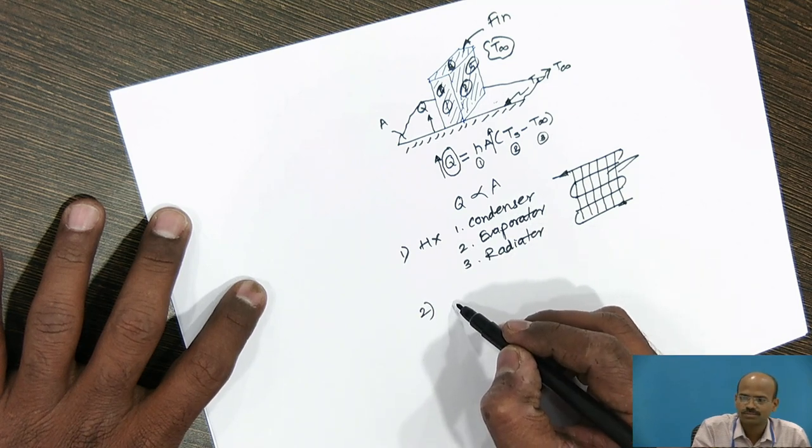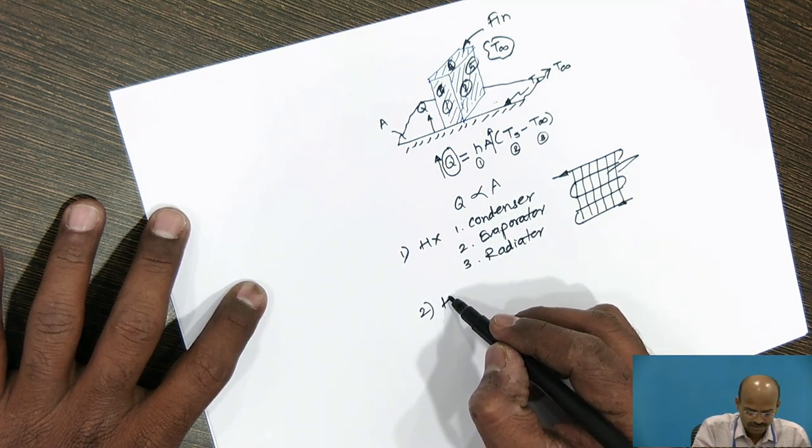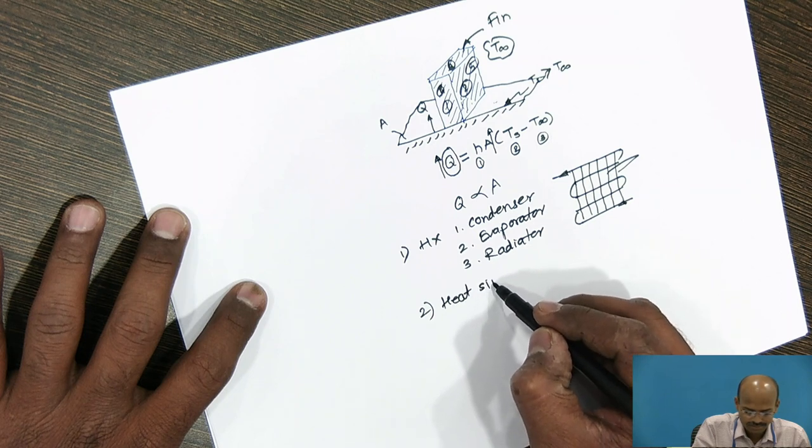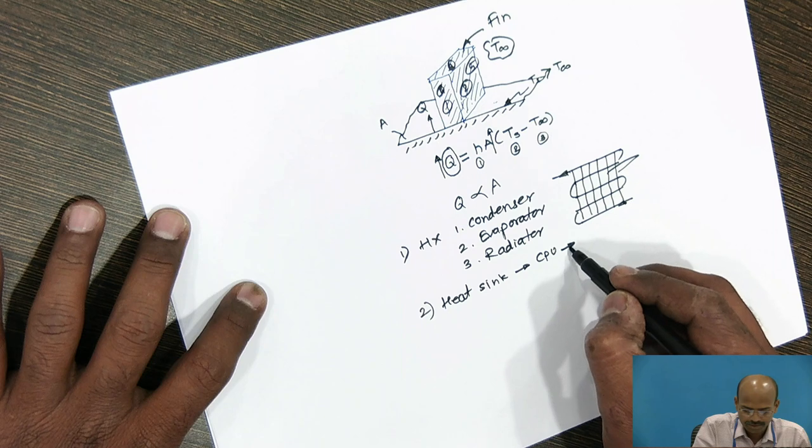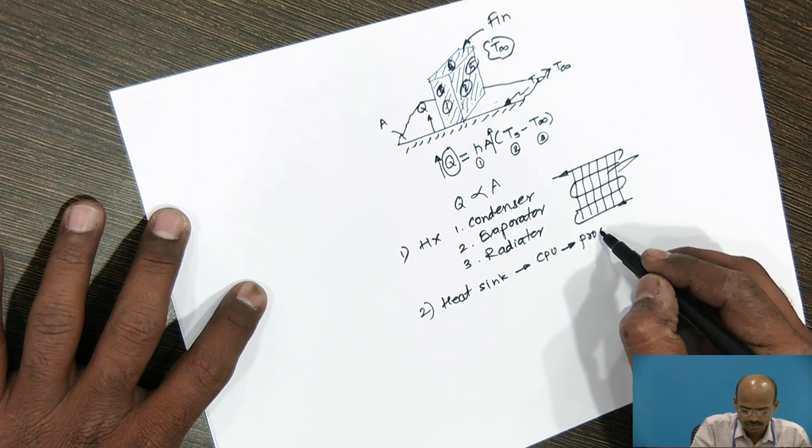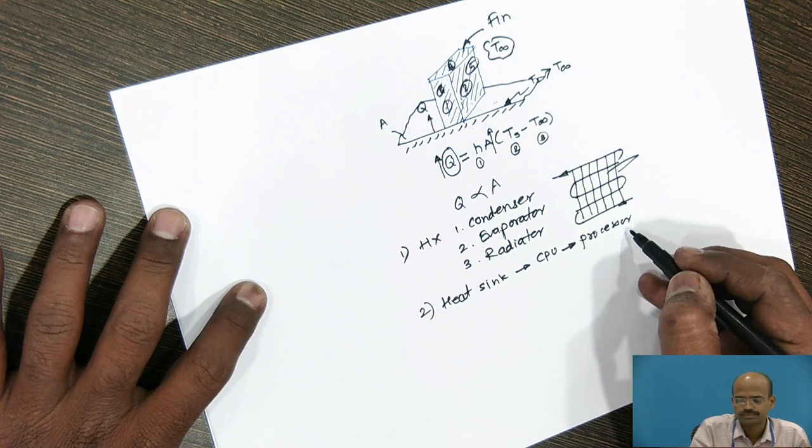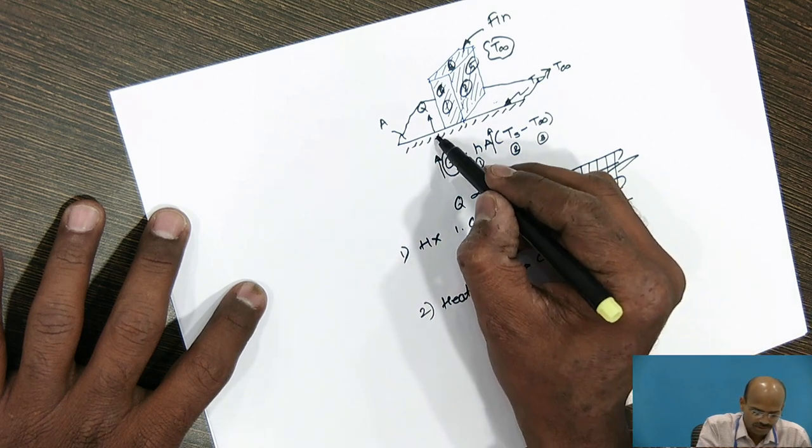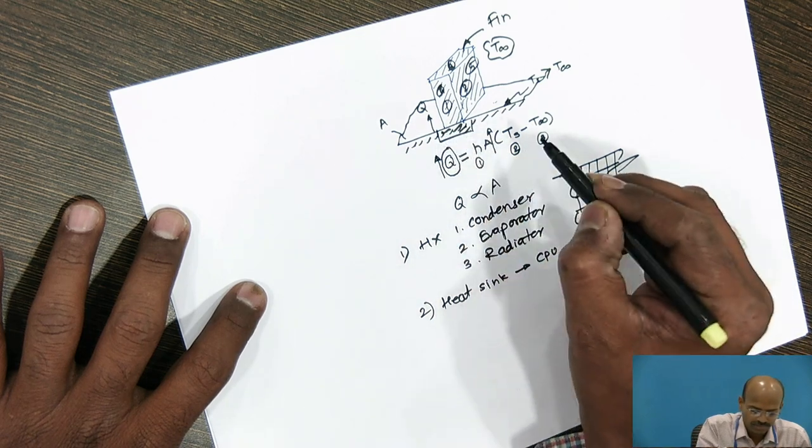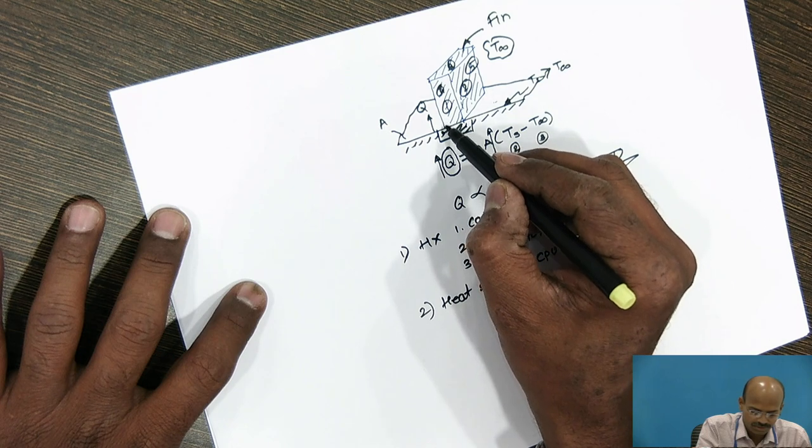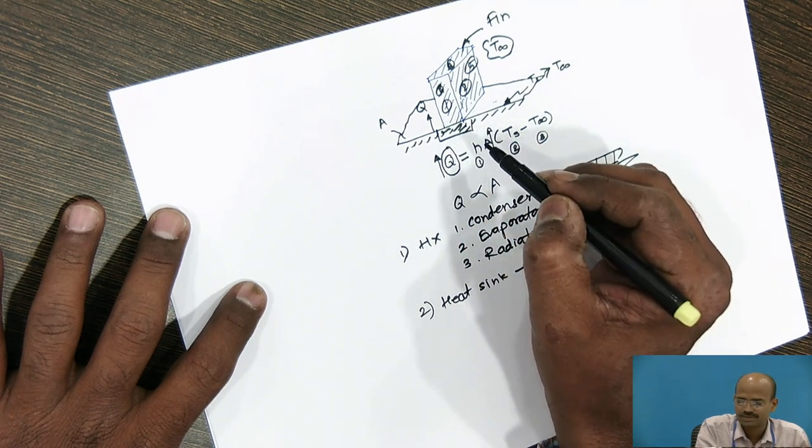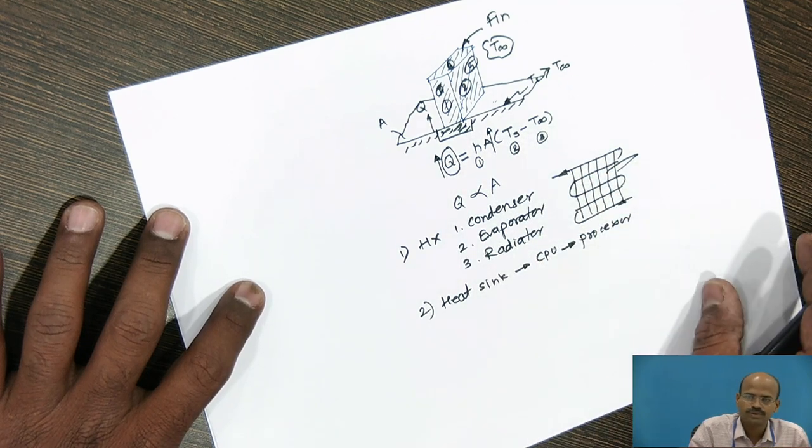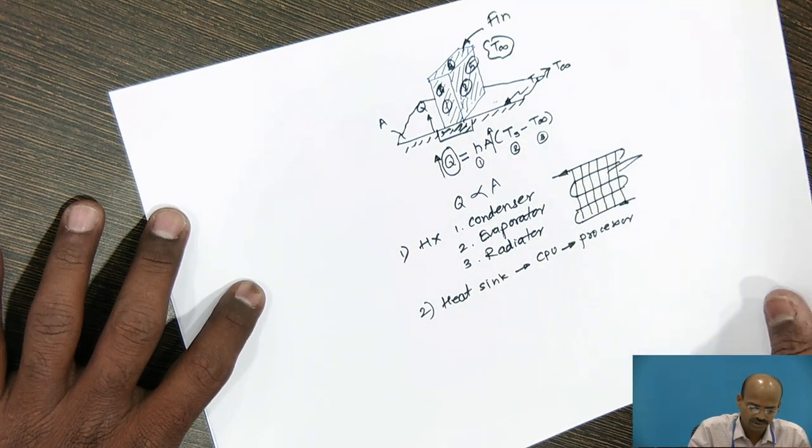We can consider second application as heat sink used in the CPU processor. So, the processor needs to be cooled. Suppose, this is the processor chip. On this processor chip, vertical such type of rectangular fins are attached. With these few examples, we will move to the application of fins.